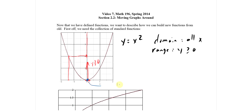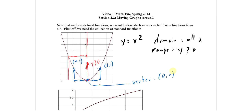That is the vertex — in this case it's (0, 0). If I go one unit right and one unit up from the vertex, I get to the point (1, 1). If I go one unit left and one unit up, I get to the point (-1, 1). When we move the graphs around, where these points go will help us determine whether the graph has been scaled. So for y equals x squared: domain is all x, range is y ≥ 0, vertex is (0,0), and key points are (1,1), (-1,1), and (0,0).